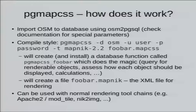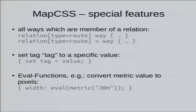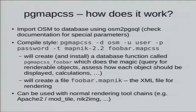So what is pgMapCSS? pgMapCSS uses a more or less standard OSM-to-pgsql database, and you compile your style. This creates two things: first, a database function — and this is where the magic happens. It queries the renderable objects, checks how each object should be rendered (width, color, offset, etc.), and evaluates calculations like the width example. It also creates a .mapnic file — actually it should be .xml, which is the standard, but I called it .mapnic. These mapnic files can be used in a normal rendering toolchain, like with mod_tile or 'nik to image,' whatever you like.